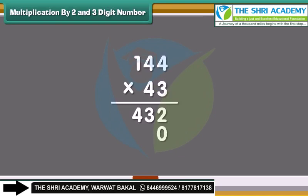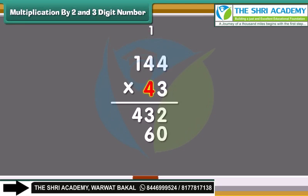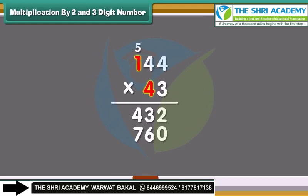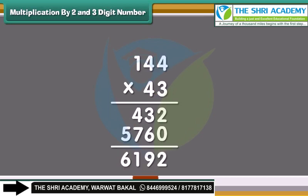Now add a 0 in the 1's place and multiply 4 by the digit in the 1's place. 4 times 4 is 16 — write 6 in the 10's place and carry 1 forward to the 100's place. Multiply 4 with the 4 in the 10's place and add the carried 1 — write 7 in the 100's place and carry 1 to the 1000's place. Multiply 4 with 1 in the 100's place and add the carried 1 — write 5 in the 1000's place. Now add the two values. We get 6192. So, 144 multiplied by 43 is 6192.